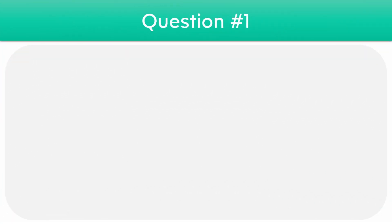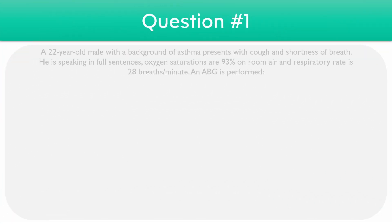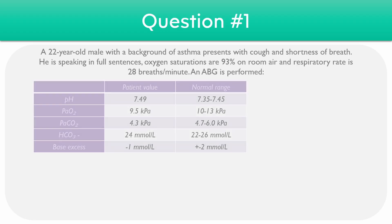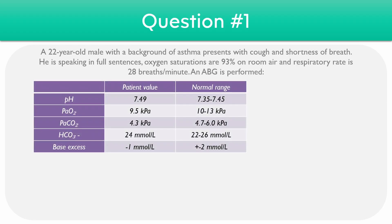Starting with the first question, here we have a 22-year-old male with a background of asthma who presents with a cough and shortness of breath. He's speaking in full sentences, his oxygen saturations are 93% on room air, and his respiratory rate is 28 breaths per minute. And we have our first ABG result here.